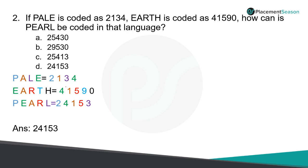In both words, E is given 4 and A is given 1 — those are the common letters. So P is represented by 2, A by 1, L by 3, E by 4. Similarly, R is represented by 5, T by 9, and H by 0. When you code the word PEARL: P is 2, E is 4, A is 1, R is 5, and L is 3. So your answer will be 2-4-1-5-3. This also comes under coding and decoding.